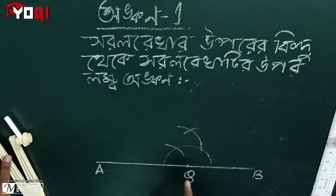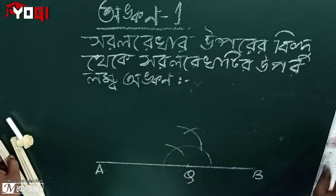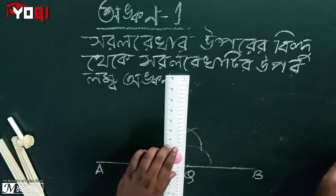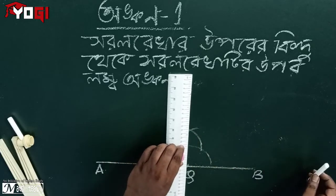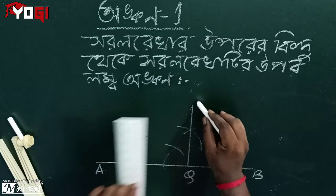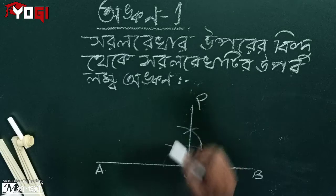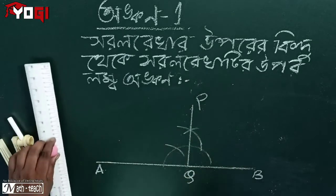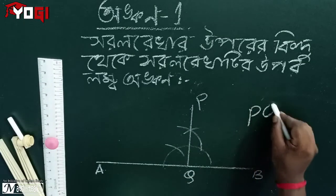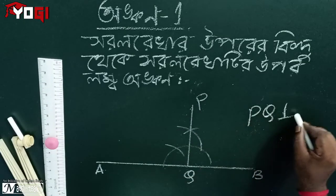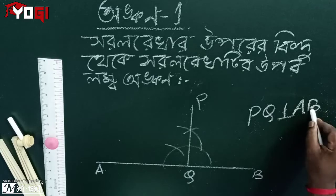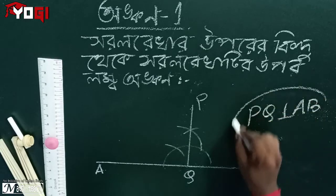Then we put it. The name is P, P, Q, Lambda, AB. So A is a model.